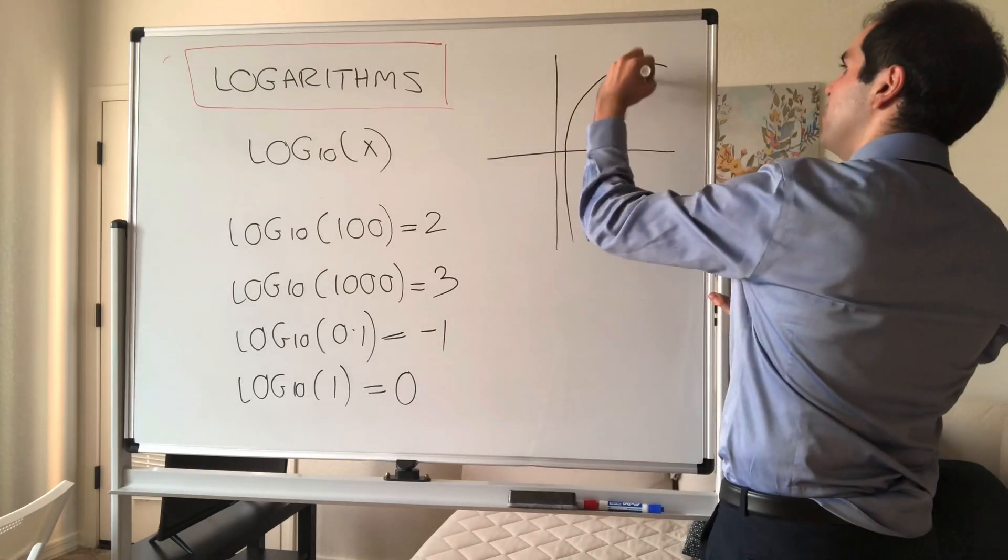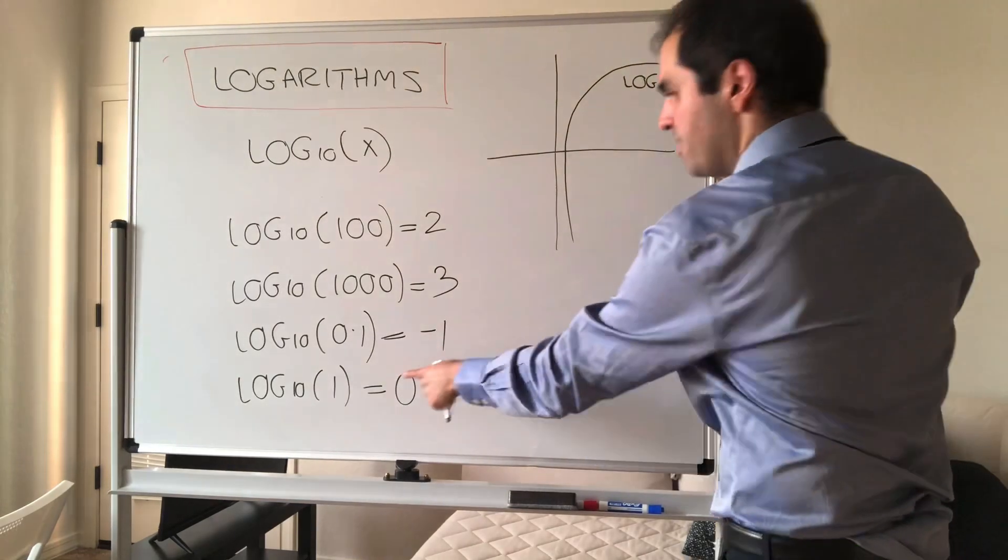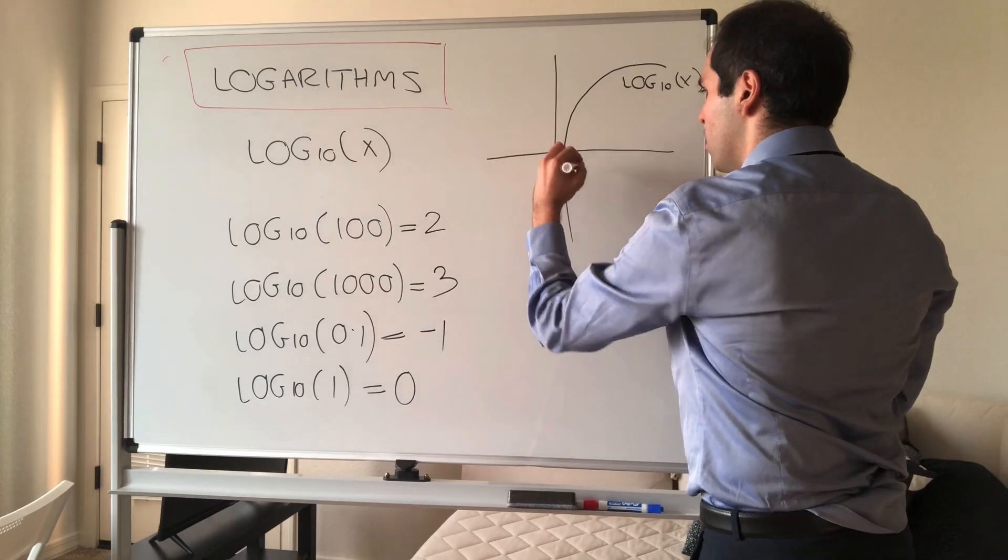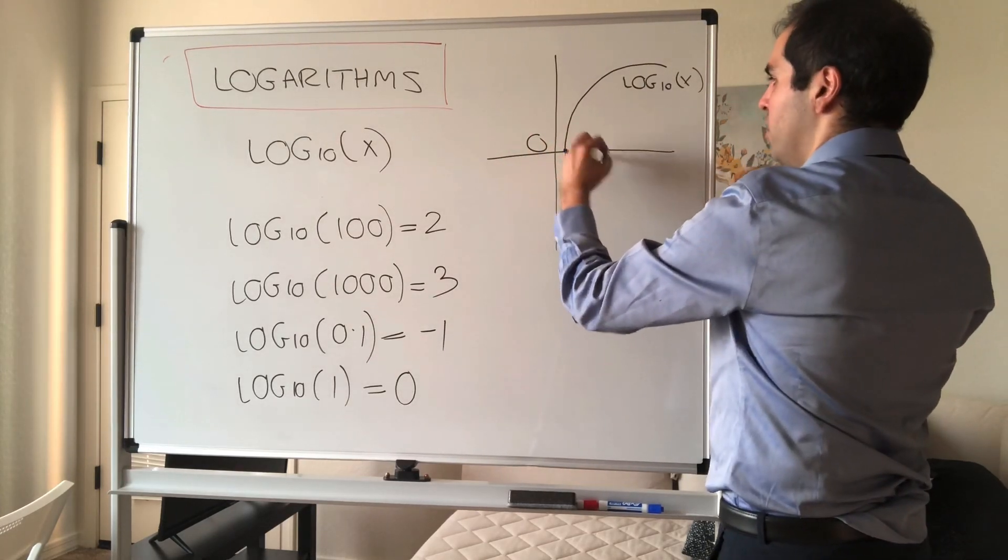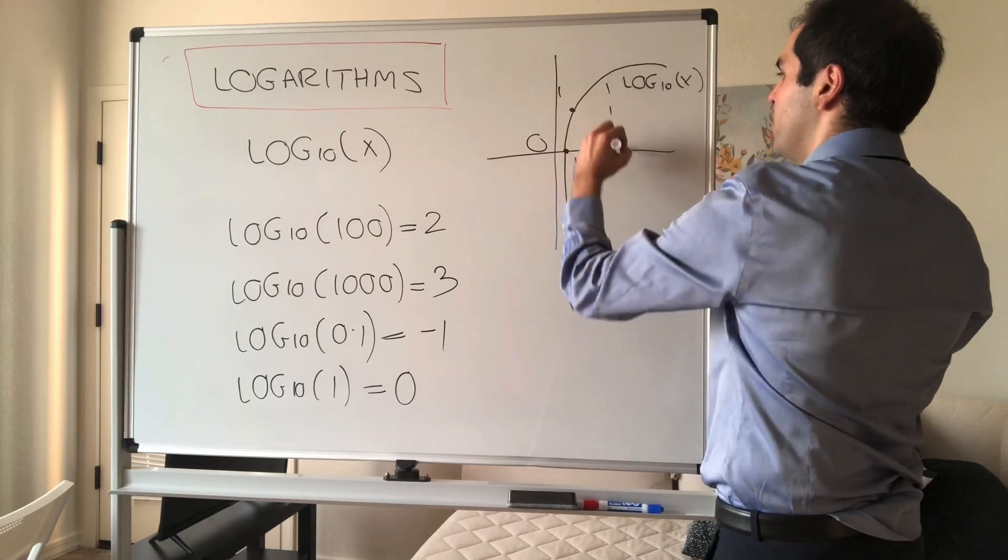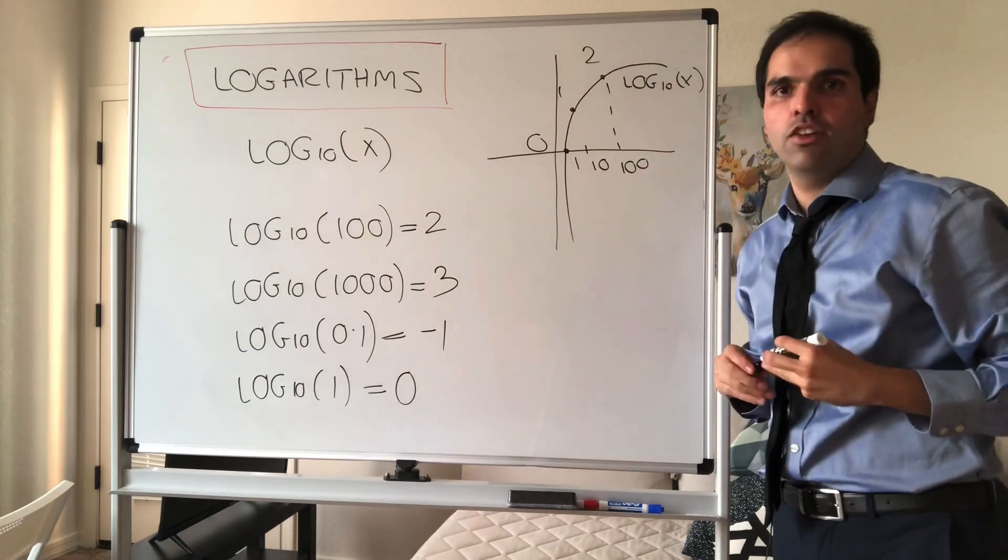Here's a nice picture of it. This is log base 10 of x. For instance, we've seen that at 1 it's 0, at 10 it's 1, at 100 it's 2, etc. So it grows very slowly.